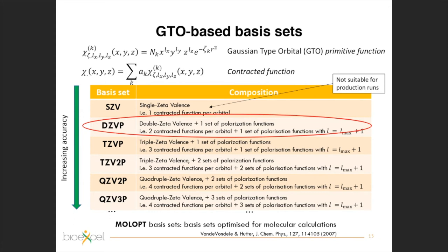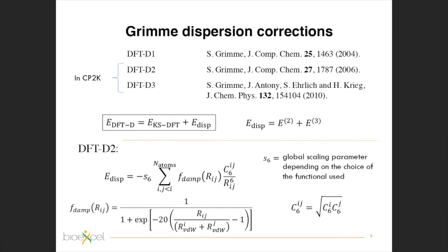Over the years, within the DFT dispersion scheme, we moved from D1 to D2 to D3, making the correction's functional form and parametrization more accurate. The main difference between DFT-D2 and DFT-D3 is that DFT-D2 contains only two-body correction terms — terms that take into account only the interaction between two atoms at a time.